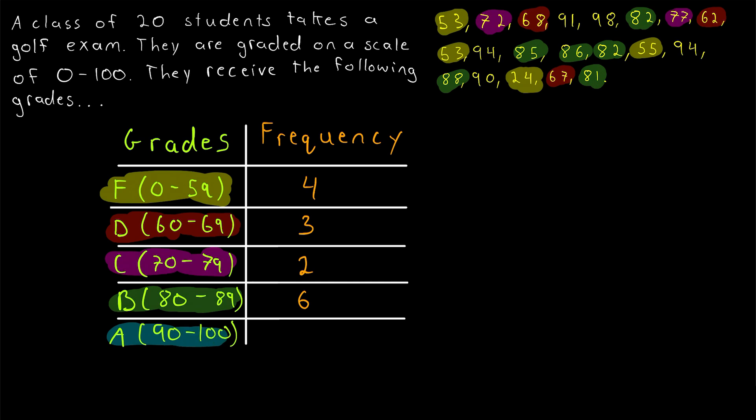And now we just got to count up the A's. The scores between 90 and 100. 91. There's 1A. 98. That's 2A's. 94. That's 3A's. And another 94. That's 4A's. And then 90. So 5A's. And there we are. We're done with the basic frequency table.